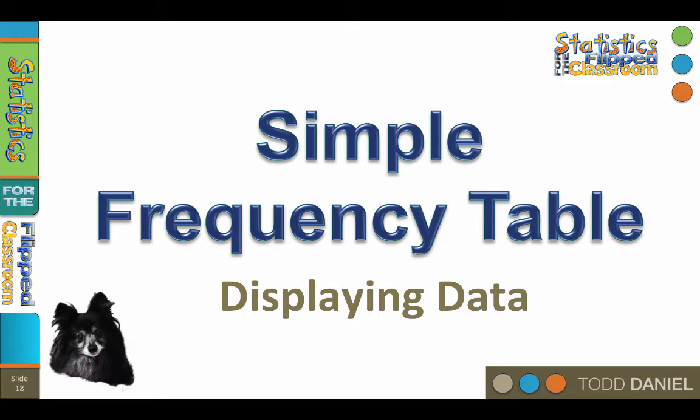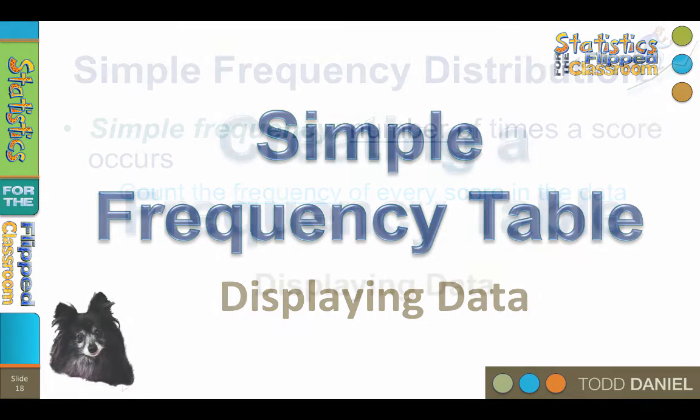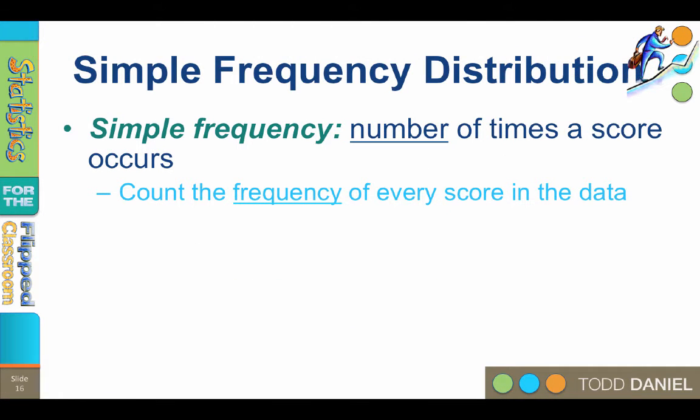Now that we know what frequency is, let's create our first frequency table. The term simple frequency refers to the number of times a score occurs in the data set. To calculate simple frequency, we simply count the number of occurrences for each score in the data.